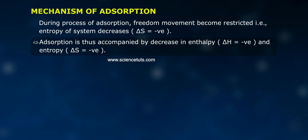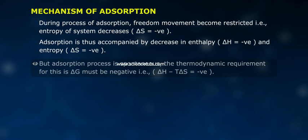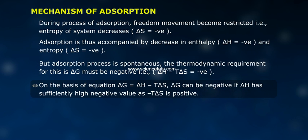Adsorption is thus accompanied by a decrease in enthalpy (delta H = negative) and entropy (delta S = negative). But the adsorption process is spontaneous. The thermodynamic requirement for this is delta G must be negative, that is, delta H minus T delta S equals negative. On the basis of the equation delta G = delta H minus T delta S, delta G can be negative if delta H has a sufficiently high negative value, since T delta S is positive.